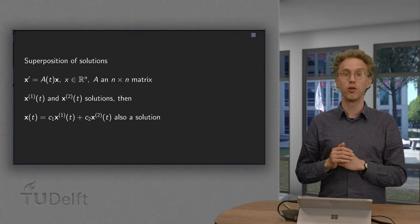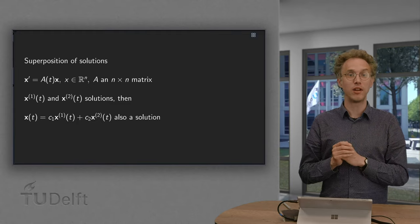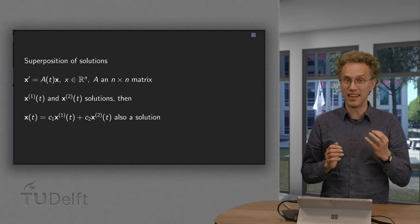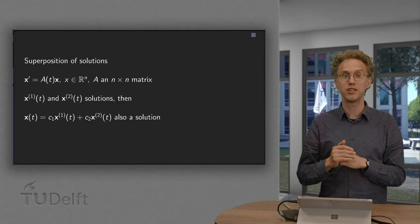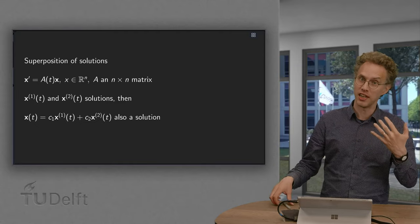This even holds for any linear combination. Why do we have this and where does the linearity and the homogeneity come in? That is what you will see in this video.